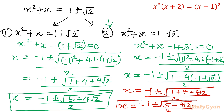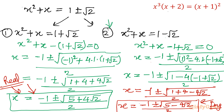Now, how many solutions are real and how many are imaginary? The first two solutions from equation 1 — those are real values. The two solutions from equation 2 are imaginary or complex, because 4√2 is more than 6, which is more than 5, so the value under the square root would be negative — giving complex solutions. I hope you liked this video. Thank you so much for watching — don't forget to like, share, and subscribe. Bye bye, good luck!